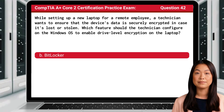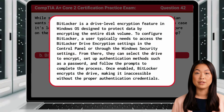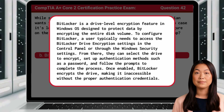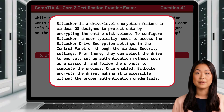The answer is B: BitLocker. BitLocker is a drive-level encryption feature in Windows OS designed to protect data by encrypting the entire disk volume. To configure BitLocker, a user typically needs to access the BitLocker drive encryption settings in the control panel or through the Windows security settings. From there, they can select the drive to encrypt, set up authentication methods such as a password, and follow the prompts to complete the process. Once enabled, BitLocker encrypts the drive, making it inaccessible without the proper authentication credentials.